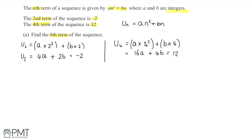Now we have two separate equations: 4a plus 2b equals minus 2, which we call equation 1, and 16a plus 4b equals 12, which we call equation 2. To solve simultaneously and eliminate one variable, we scale one equation so that the b terms match. Since equation 1 has 2b, we can multiply it by 2 to get 4b, matching equation 2.